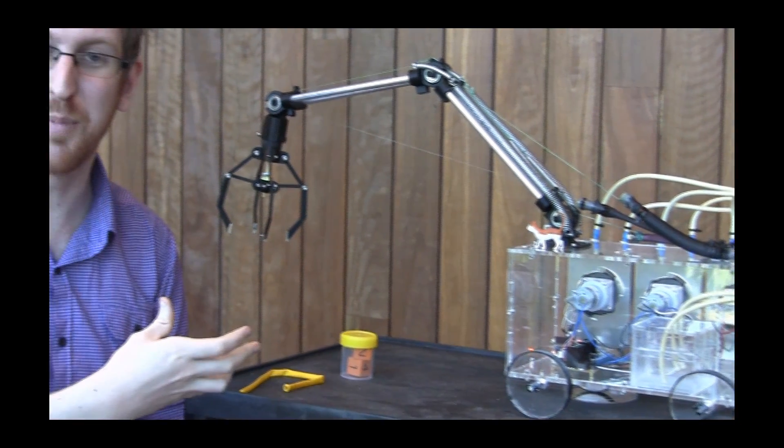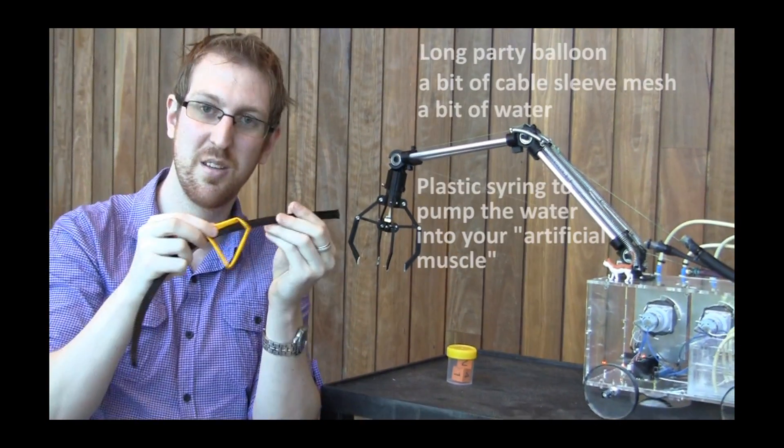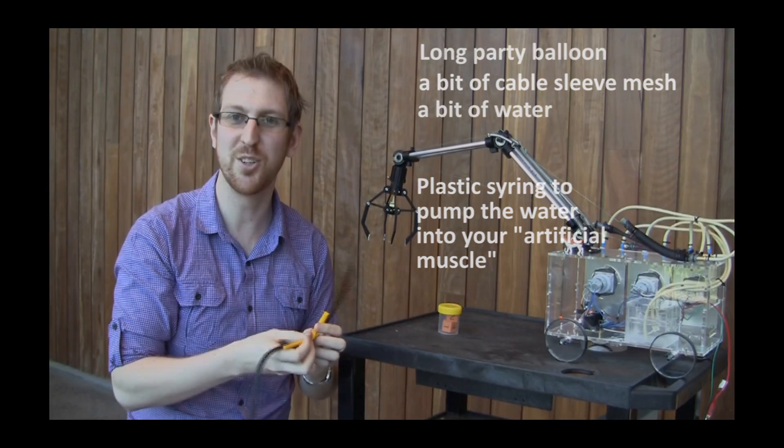Because it's very basic components, you can make all of this stuff at home. All you really need is a balloon, bit of mesh, syringe and a bit of water. And there you go, you've got yourself an artificial muscle.